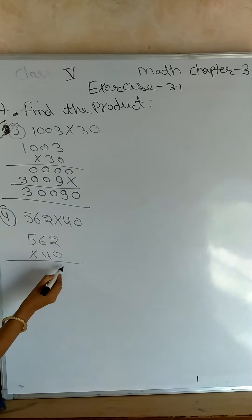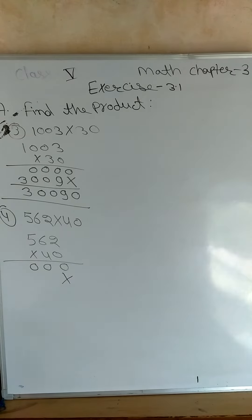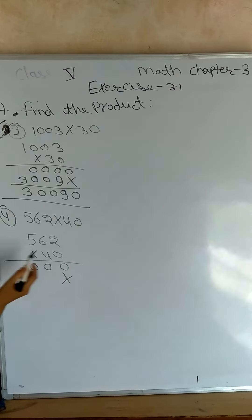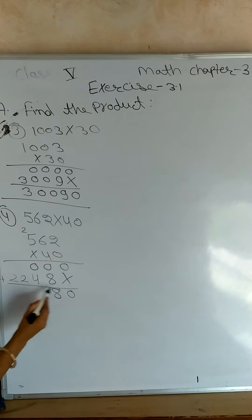0 to 6 multiply by 0. 0 to 5, 4, 6, 24, carry. 4, 5, 20, 22. Now add: 0, 8, 4, 2, 2.